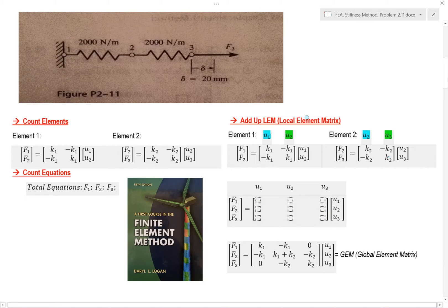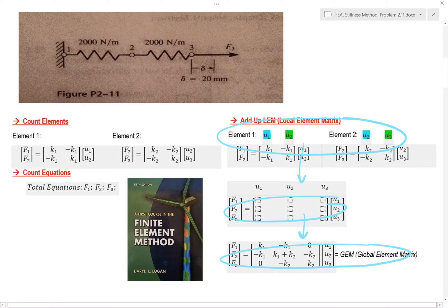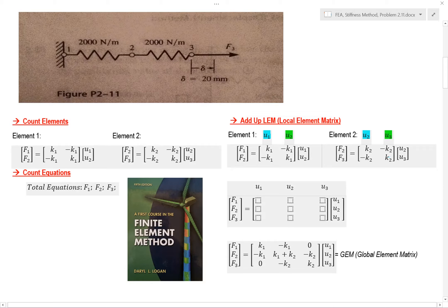Next, I need to take my two-element system, add it up, and come up with one global element system — a global element matrix. So how do we do that?